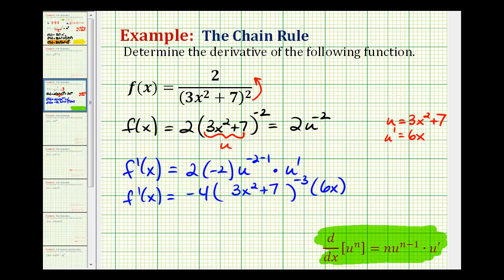And now there's one more step to simplify this. We can think of all of this as being over one, so if we move this quantity to the denominator, it will change the sign of this exponent. So our derivative function will have negative four times six x in the numerator, so negative 24 x. And our denominator will be the quantity three x squared plus seven to the positive three power, or cubed.